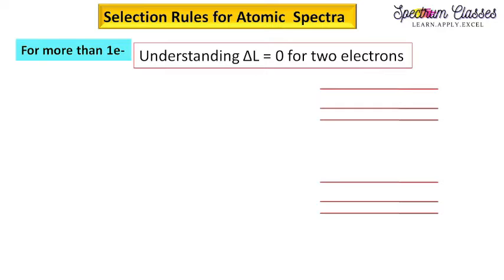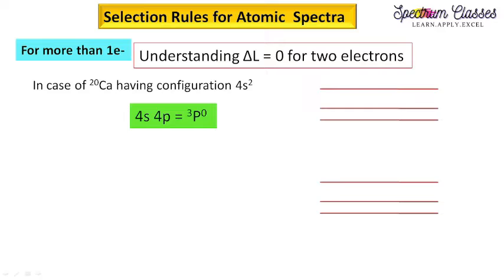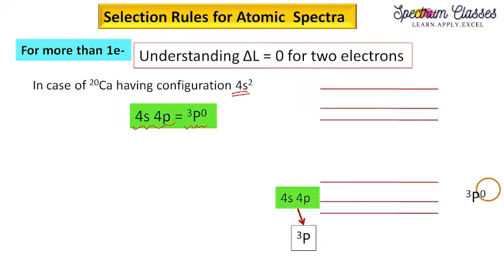Now, how can ΔL = 0 for a two-electron system? To understand this, we consider calcium (Z = 20) with the electronic configuration 4s² for the last two electrons. If 4s and 4p is the first excited state configuration, we get the term symbol ³P. This represents the normal excited state, where one electron transitions to the next higher energy state, and incorporating total angular momentum we write the corresponding terms.